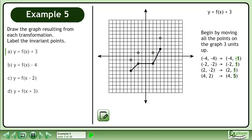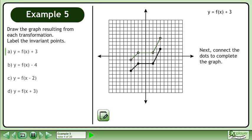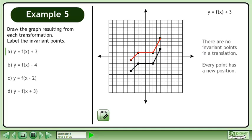Begin by moving all the points on the graph 3 units up. Next, connect the dots to complete the graph. There are no invariant points in a translation — every point has a new position.